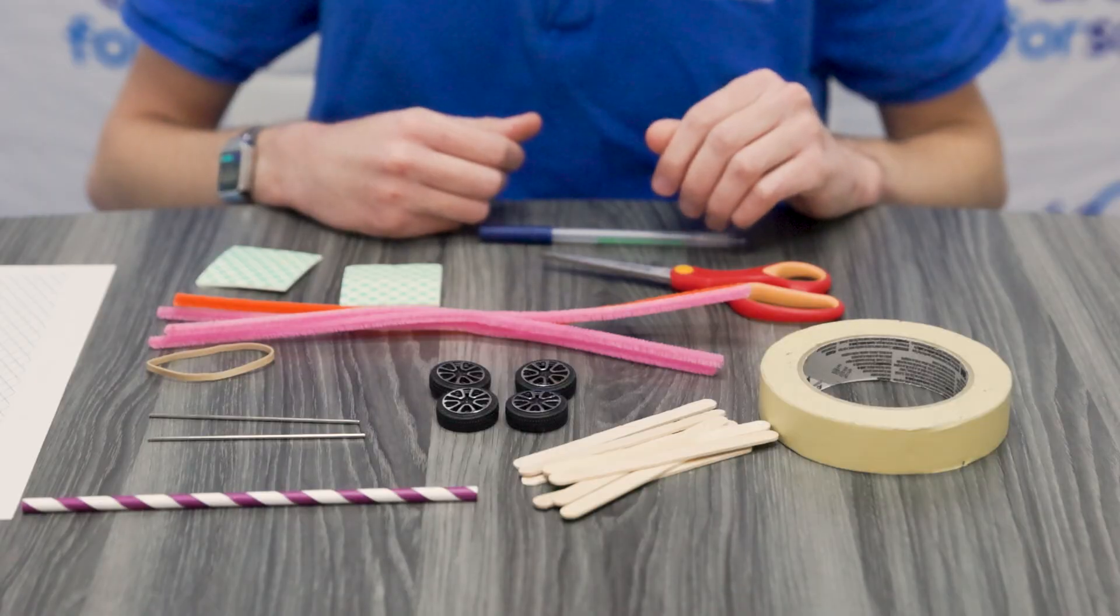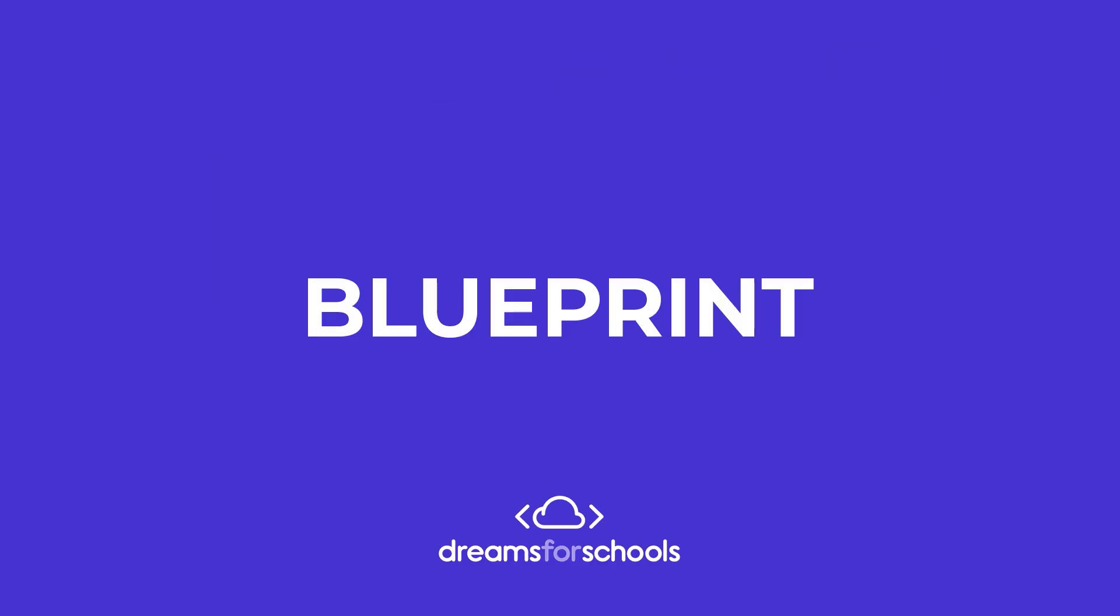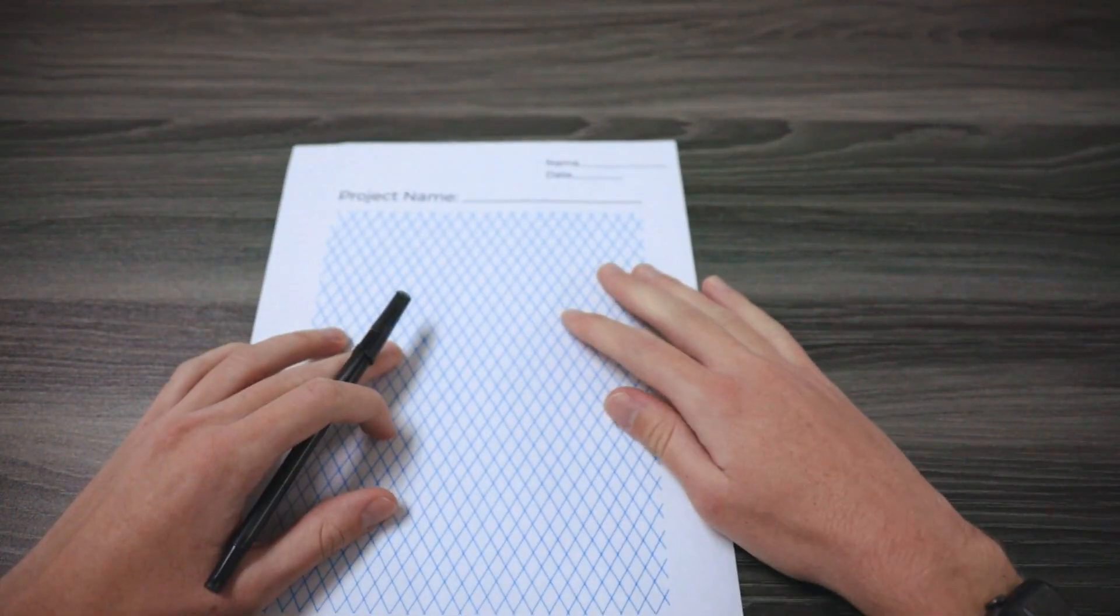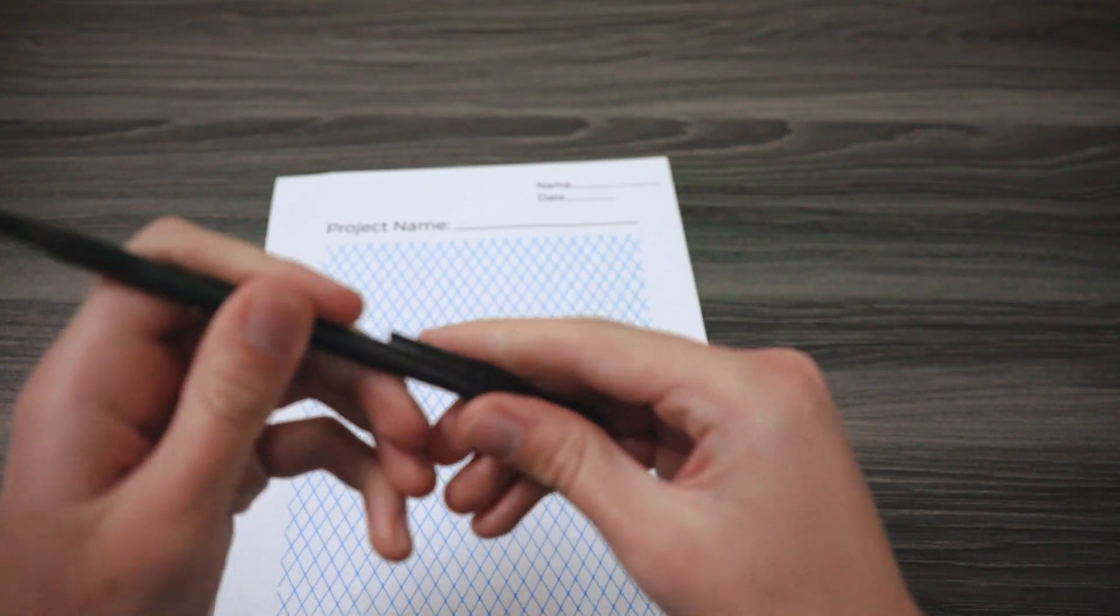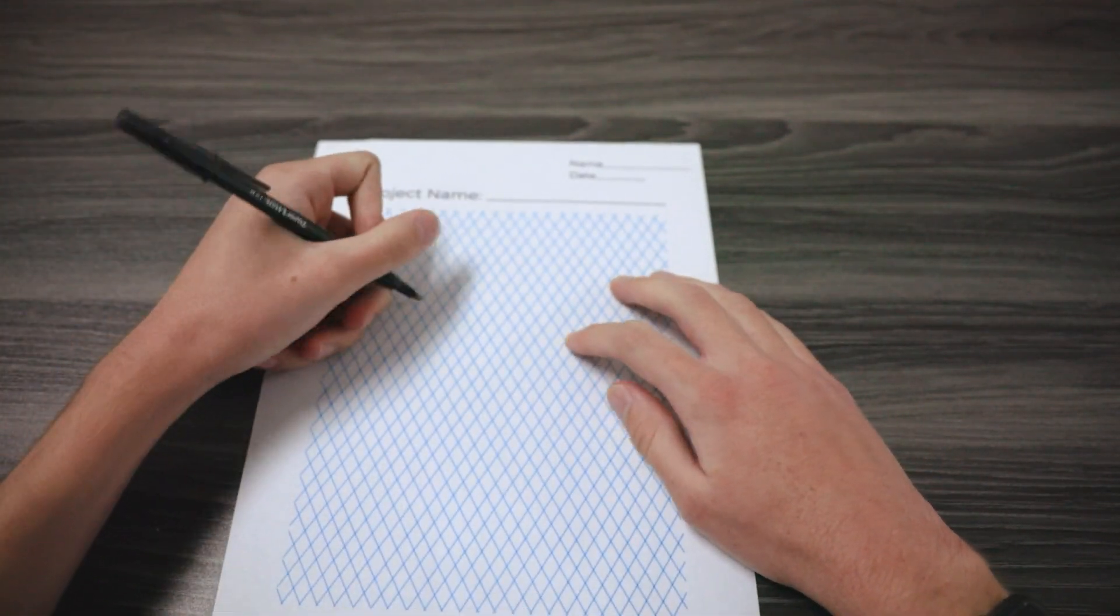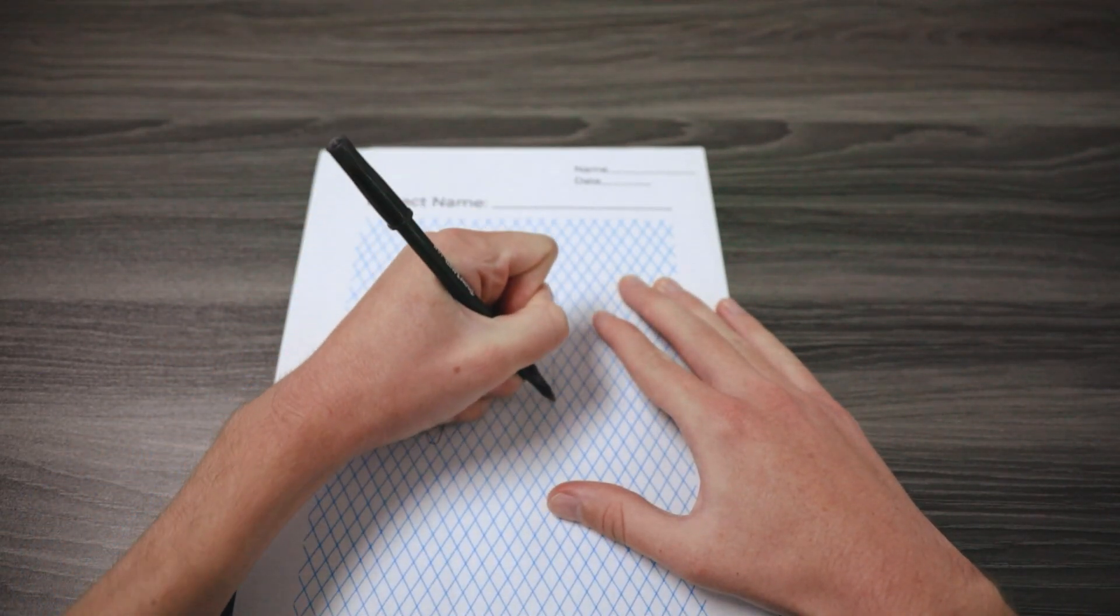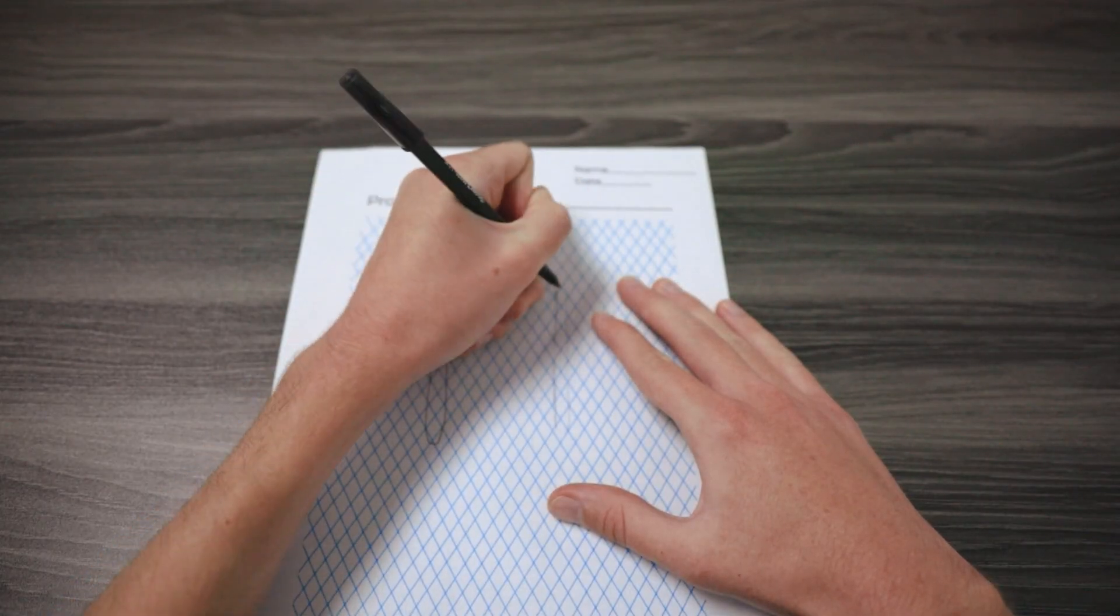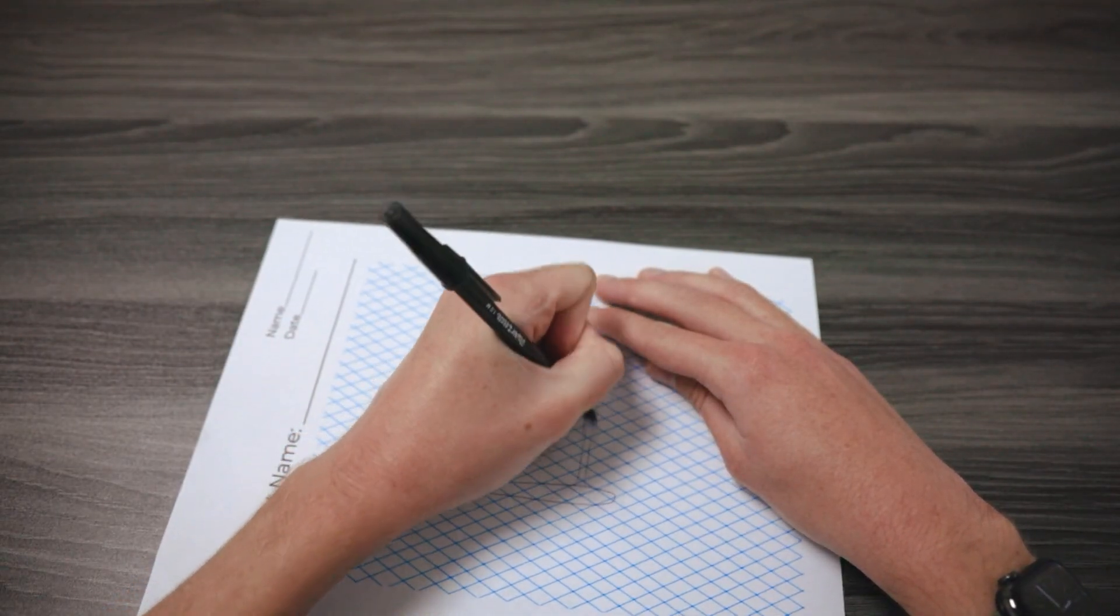Once you have all of your materials ready we can start building our project. We will start by making a blueprint to plan out what we want our slingshot car to look like. We want to start off with some basic foundation using two popsicle sticks and straws going between them.